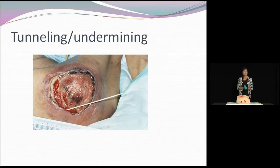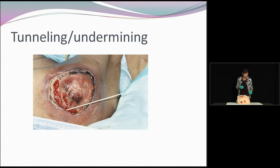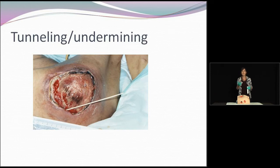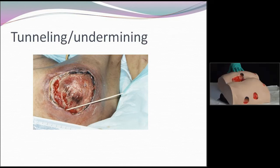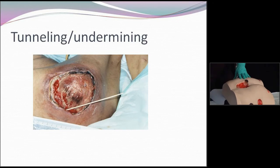I'd like to spend a few minutes to demonstrate the concepts of undermining and tunneling because those seem to be issues that a lot of clinicians struggle with. When we talk about tunneling and undermining, those are really a type of dead space that we see in wounds. As part of our comprehensive wound assessment, we look at length, width, depth, and also for the presence of any dead space such as tunneling or undermining. A tunnel is generally a tract in the wound and usually is one-directional. Using this mannequin, I'd like to demonstrate what tunneling looks like.